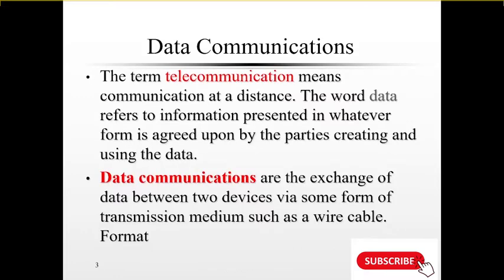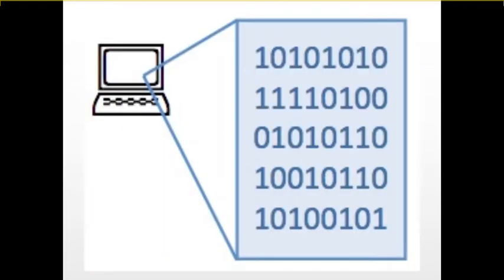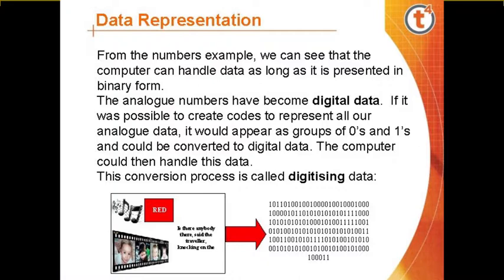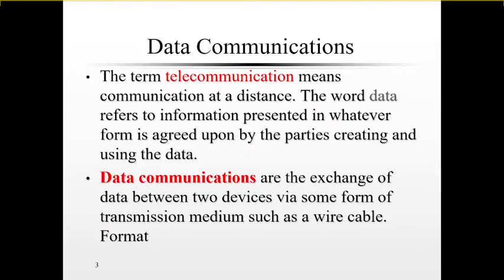Under data communication, we first understand what we mean by the term 'data.' Data can be numbers or characters presented in any form for a particular use. Data communication is the exchange of data items through electromagnetic methods, usually over a long distance. Those numbers or characters, when interpreted, yield text, images, video, and so on. Data communications are the exchange of data between two devices via some form of transmission medium, such as wire or cable.